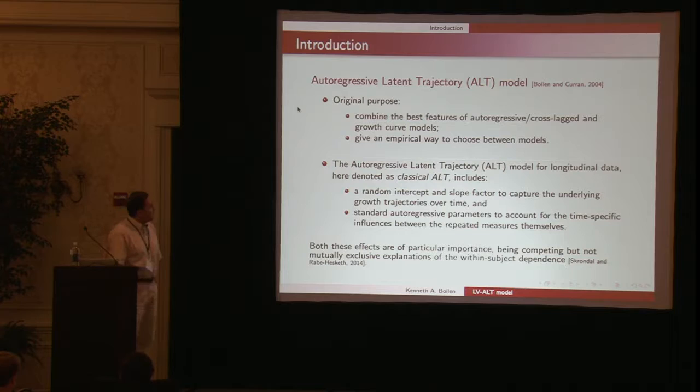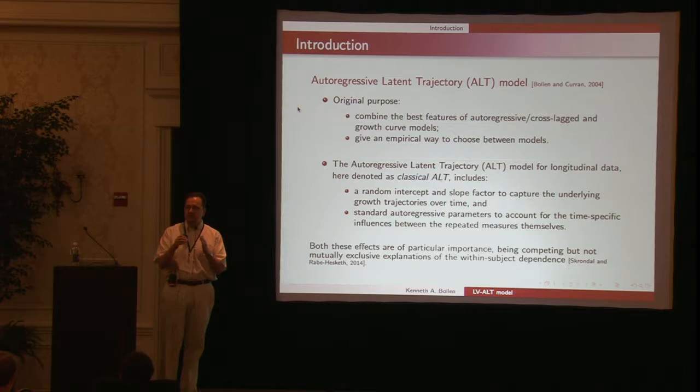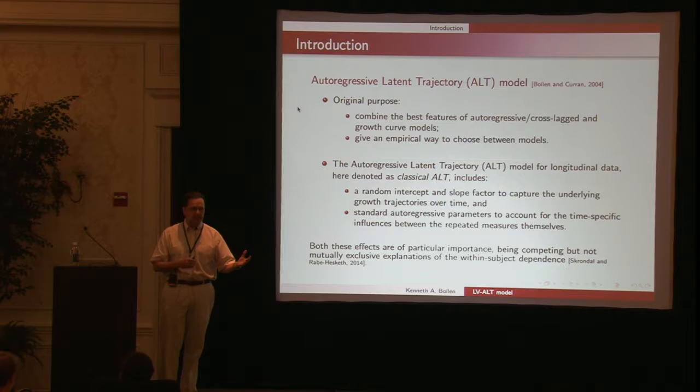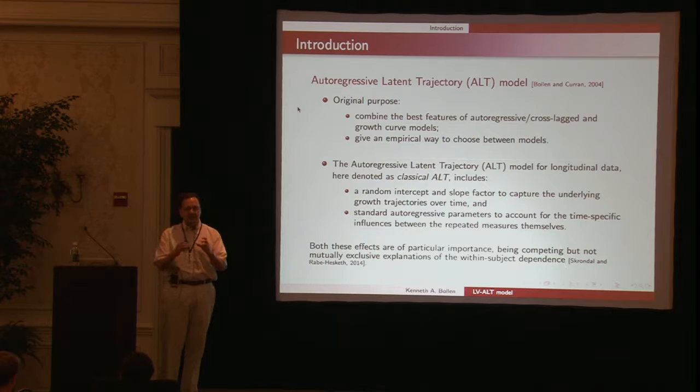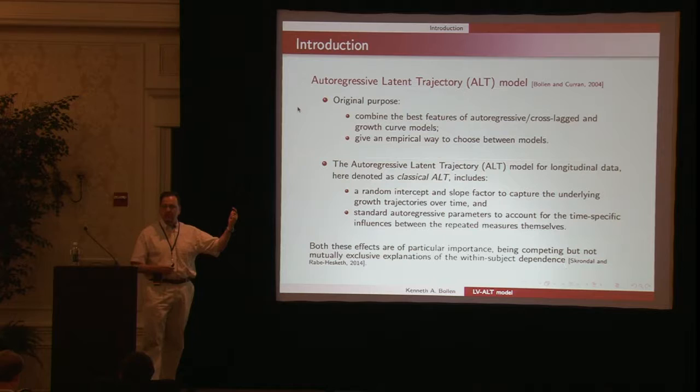This talk builds on earlier work with my colleague Patrick Curran at UNC, where we developed the autoregressive latent trajectory model. This model combined an autoregressive process, where the best predictor of the current measure is the prior value, with growth curve models, which allow each person to have a different starting point and different rate of change. People take identical longitudinal data, one group doing autoregressive models, another doing growth curves. This combines both.